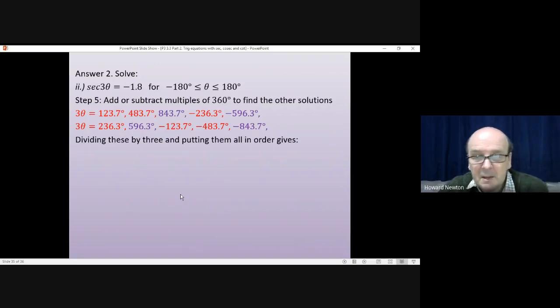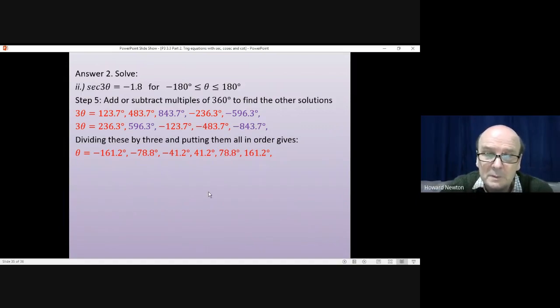So when we divide by three, put them all in order and discard the values that are outside of the range that we don't need, then we'll get θ could be minus 161.2 and these values until we get up to plus 161.2. It's worth noting the symmetry here in the answer. You always get it with cos θ. And because sec is related to cos θ, you also always get it with sec θ. As long as all you have is cosine or sec of a multiple of θ. Cosine is symmetrical around zero. That means for every positive solution, there's a matching negative solution. That'll always happen with cosine. It'll always happen with sec.